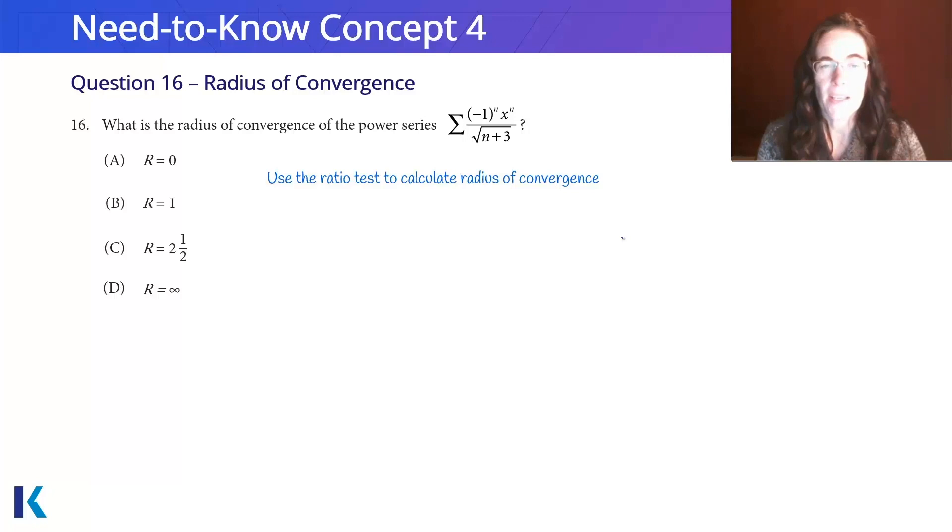We're using the ratio test so that we know that this is going to have to be less than negative 1. So when the limit of a sub n plus 1 over a sub n, that absolute value is less than 1, then I'm going to plug in what I know for a sub n.